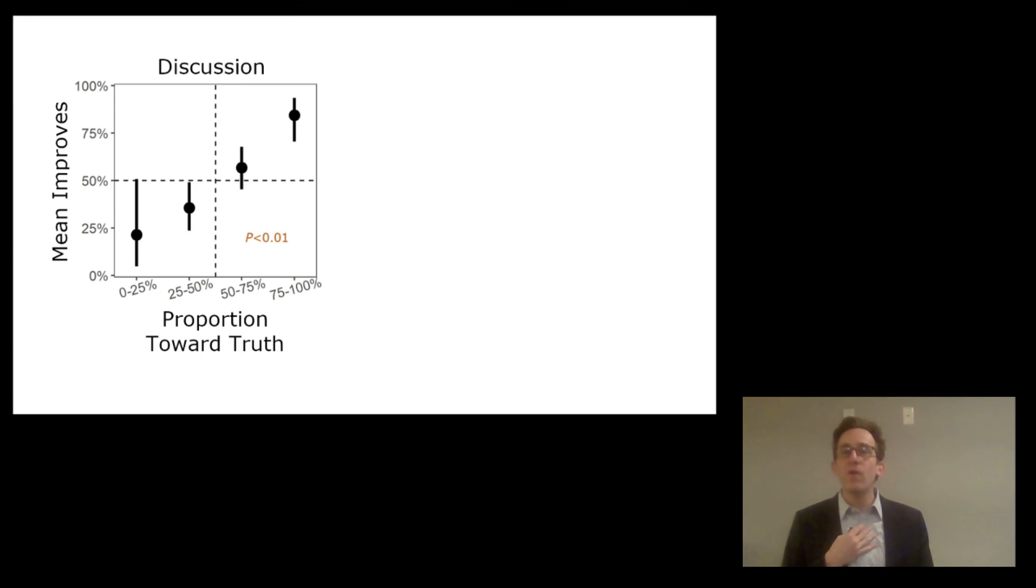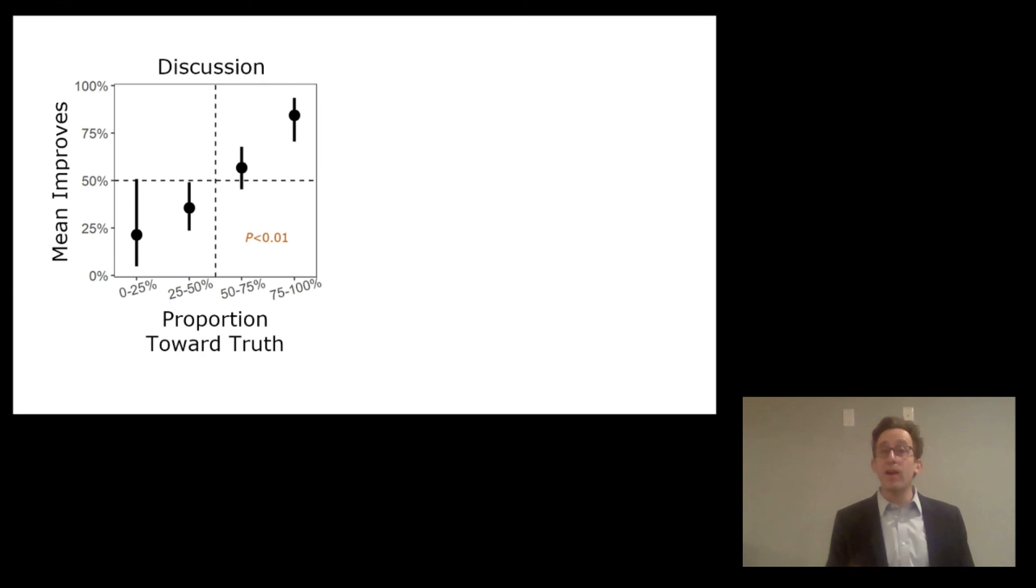One way we can see that this isn't just some general majority effect that governs all of human interaction is by comparing these outcomes to what happens in the Delphi method or numeric exchange groups. In these groups, we see no effect of that task property at all. This proportion towards truth has no bearing on whether or not groups improve. Across the board, as we figured out in the last video, this numeric exchange process just leads a majority of groups to become more accurate. My claim right now is that this is driven by this underlying mechanism that group discussion acts like a centralized network.